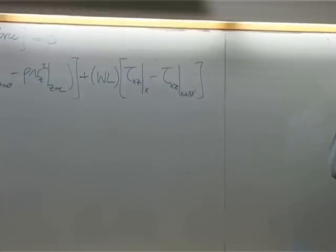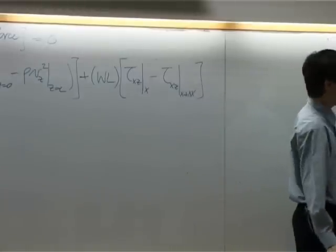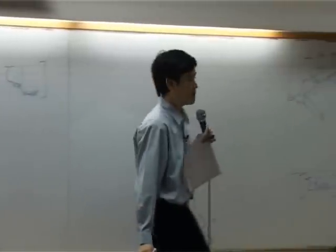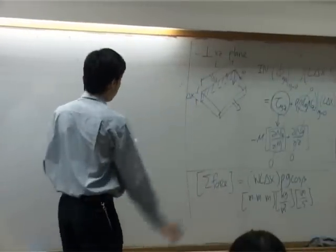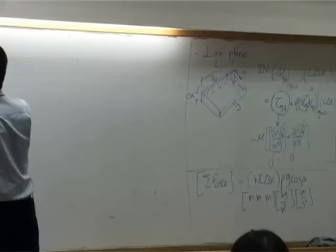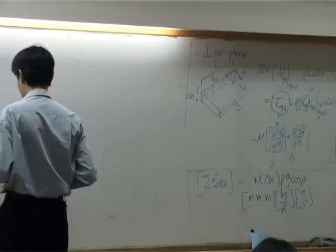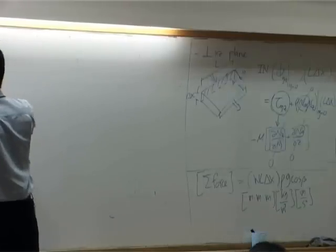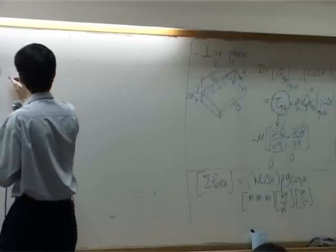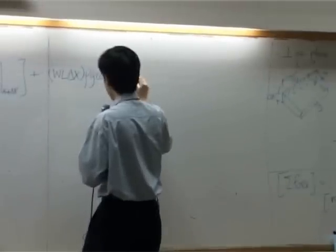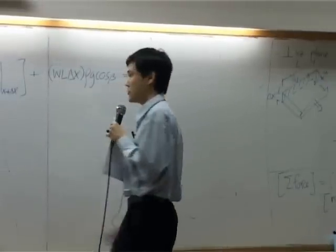Third term, the one perpendicular to XZ plane has nothing because it's zero. They are all zero, so you can just neglect them. The last term is force: WL delta X rho G cosine beta equal to zero.